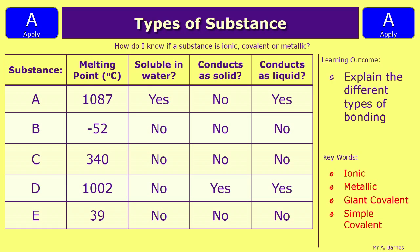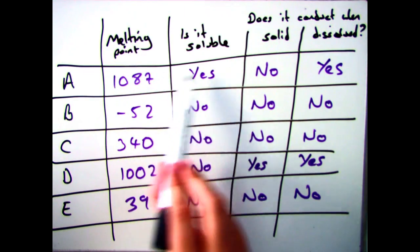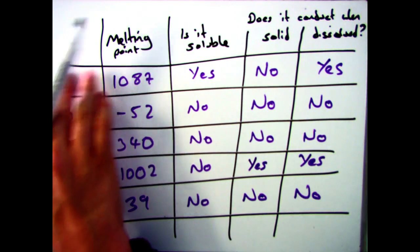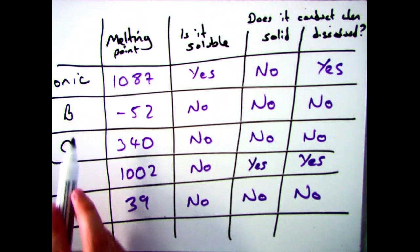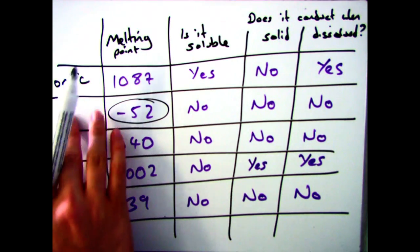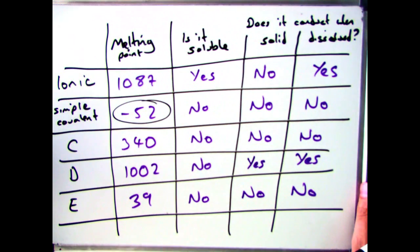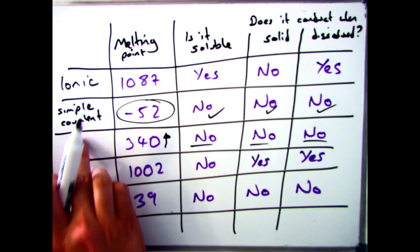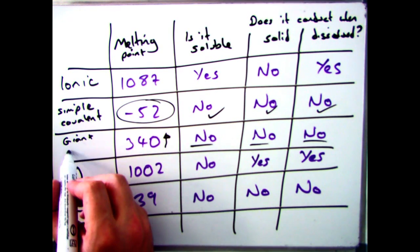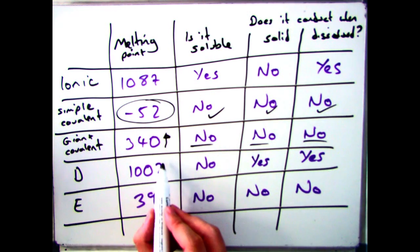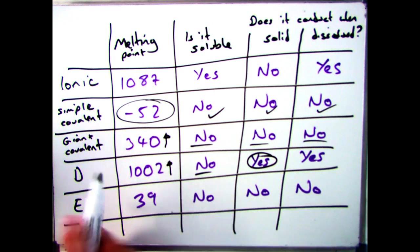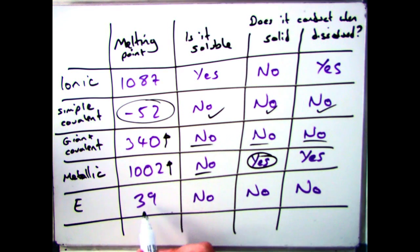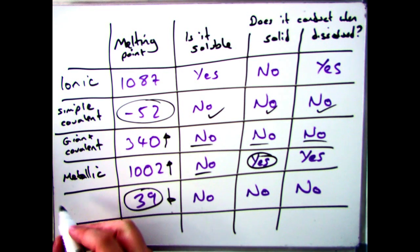Now for the apply section: look at substances A to E and use their properties to identify each type. Substance A has a high melting point, is soluble, doesn't conduct when solid but does conduct when dissolved — that means it's ionic. B has a low melting point, so straight away it's simple covalent, confirmed by being insoluble and non-conducting. C has a melting point of 340°C which is high, is insoluble, and doesn't conduct when solid or dissolved — so it must be giant covalent. D has a high melting point, is insoluble, and conducts when solid — straight away that's metallic. E has a low melting point, so again we don't need to go further — it's simple covalent.